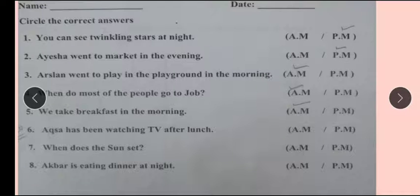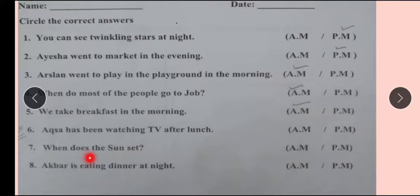When does the sun set? Is it in the day or in the night? It is at night. So you will use AM or PM? Aqbar is eating dinner at night — since it is night, you will know exactly what you have to circle.